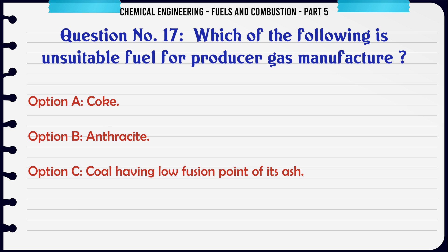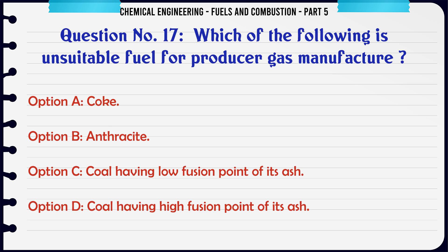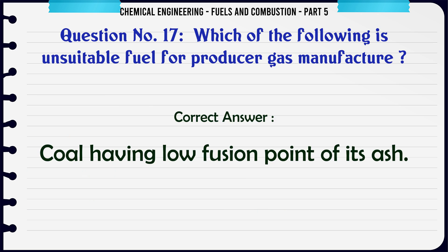Which of the following is an unsuitable fuel for producer gas manufacture? A. Coke. B. Anthracite. C. Coal having low fusion point of its ash. D. Coal having high fusion point of its ash. The correct answer is coal having low fusion point of its ash.